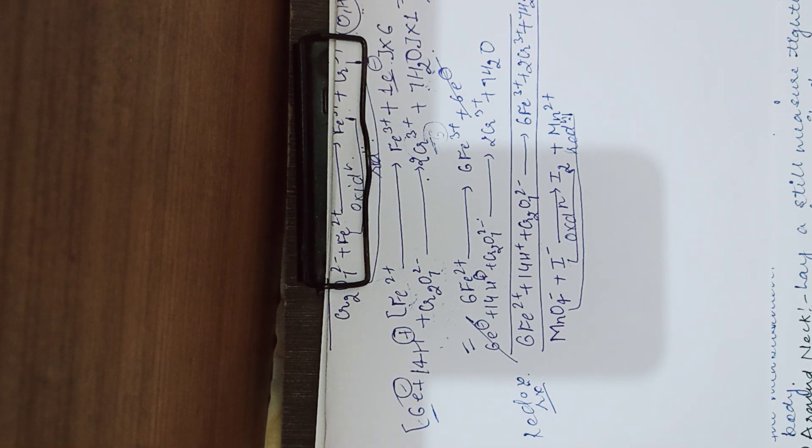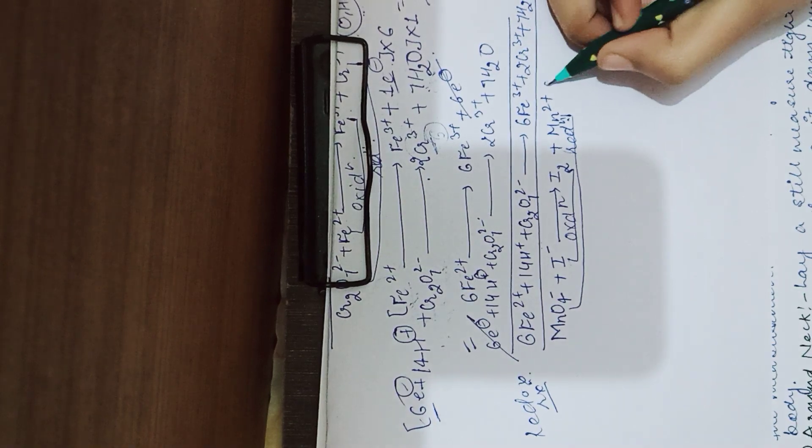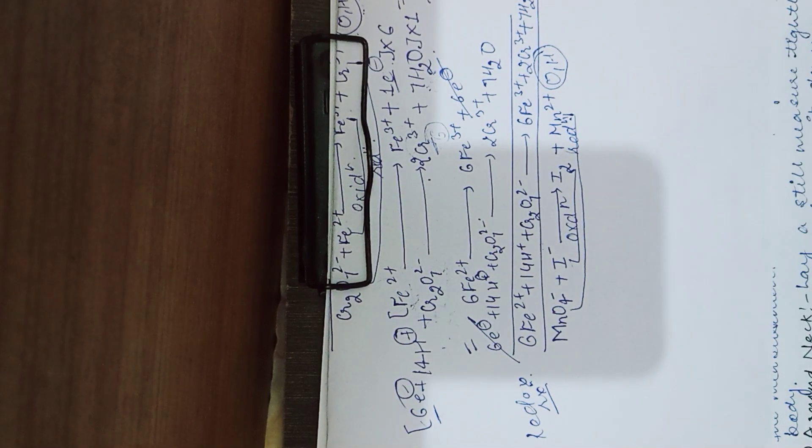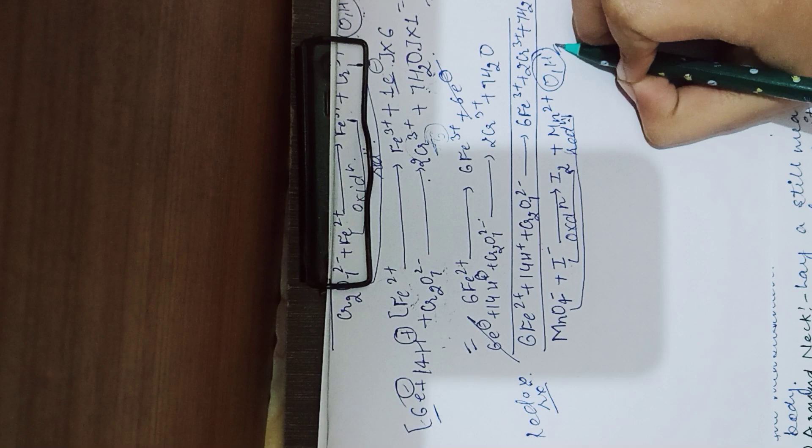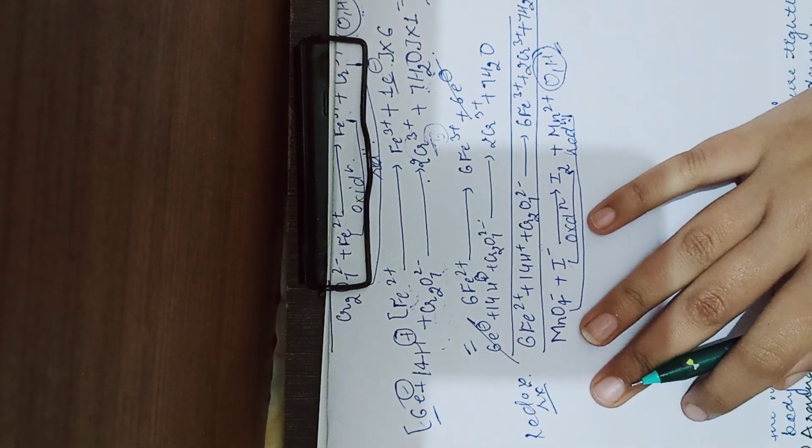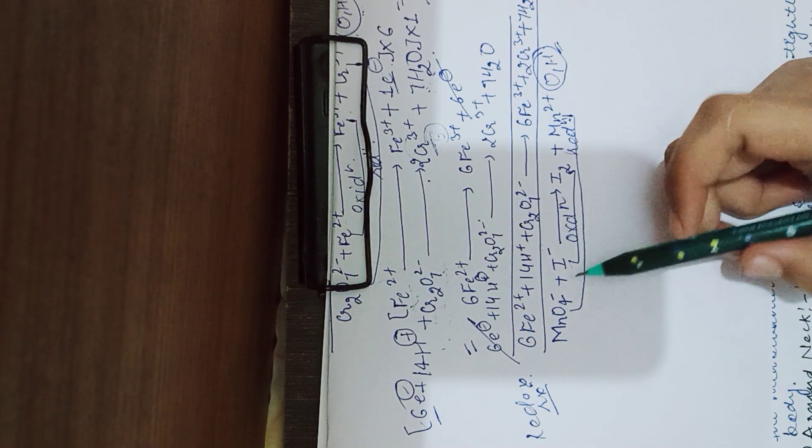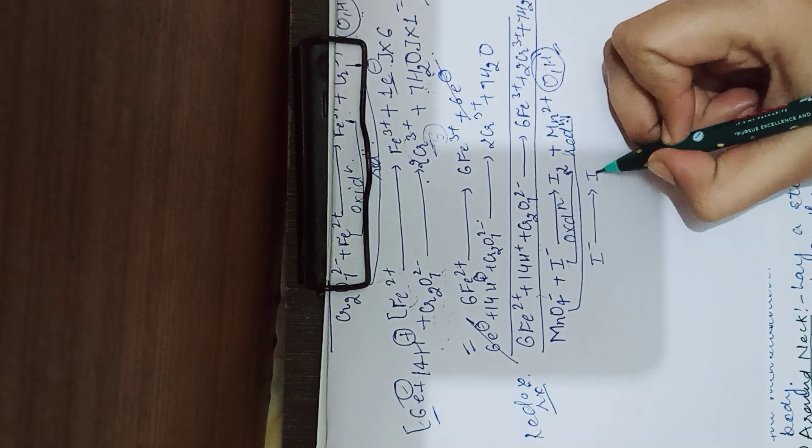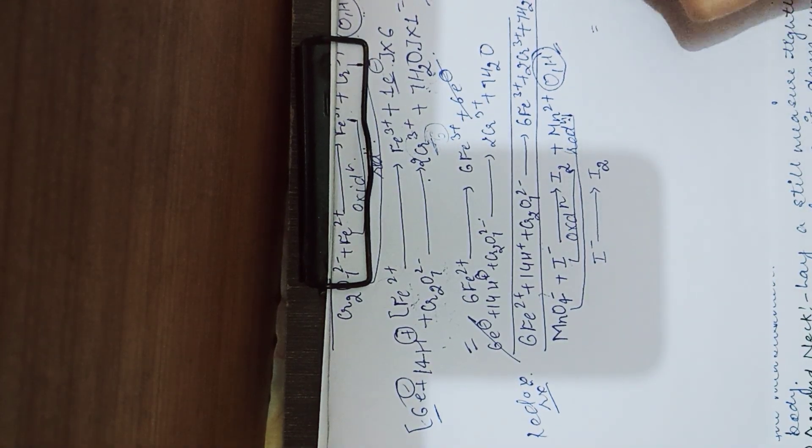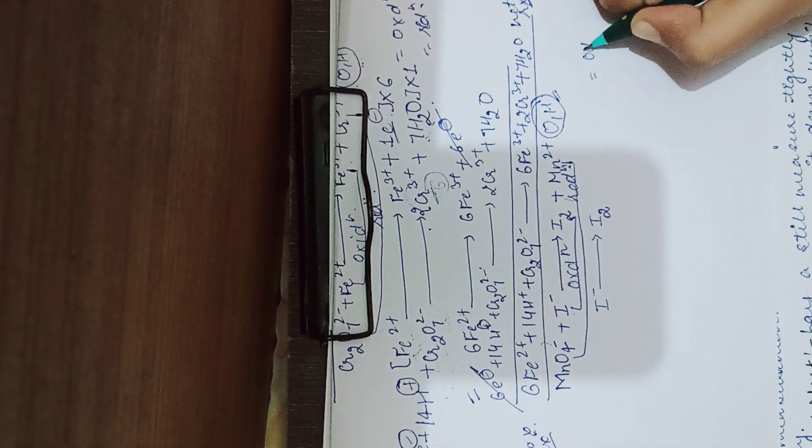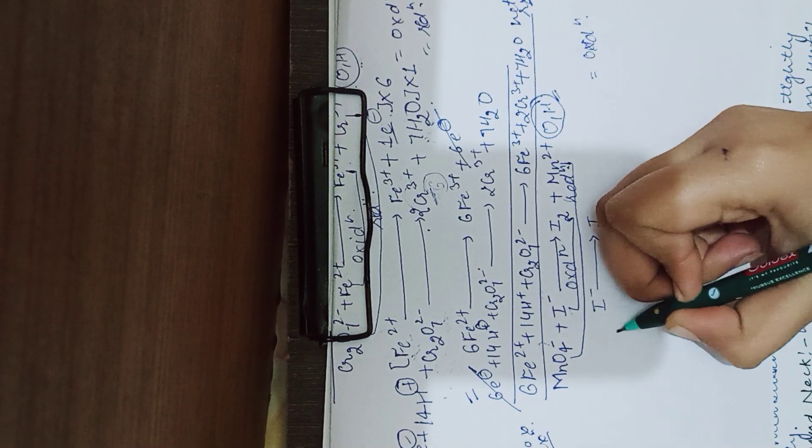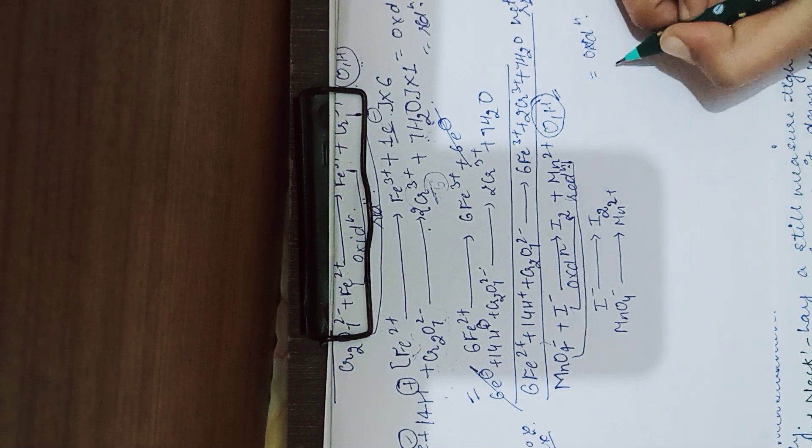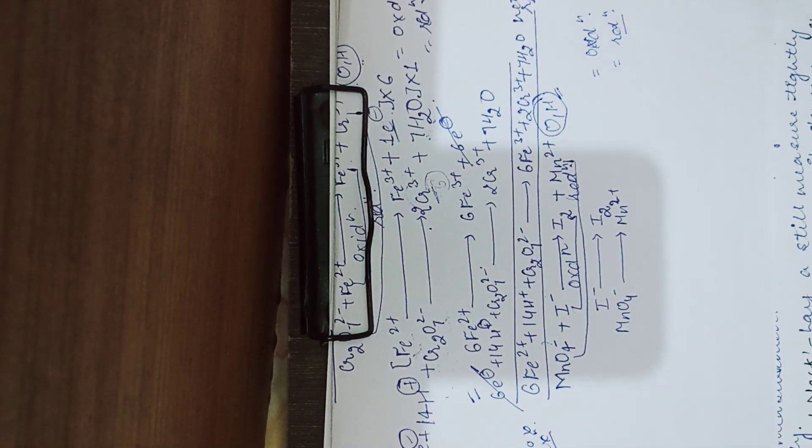Now we will solve the equation. Subse pahle oxygen and hydrogen ko chod ke jo bhi dikhye, unhe sab ko balance karengi. So balance karengi oxygen and hydrogen ko chod ke jo bhi elements dikhye, unhe sab ko balance karengi. So subse pahle hum oxidation and reduction ko alag karengi: I negative gives you I2 is oxidation. Next is MnO4 negative gives you Mn2 plus is reduction, clear?